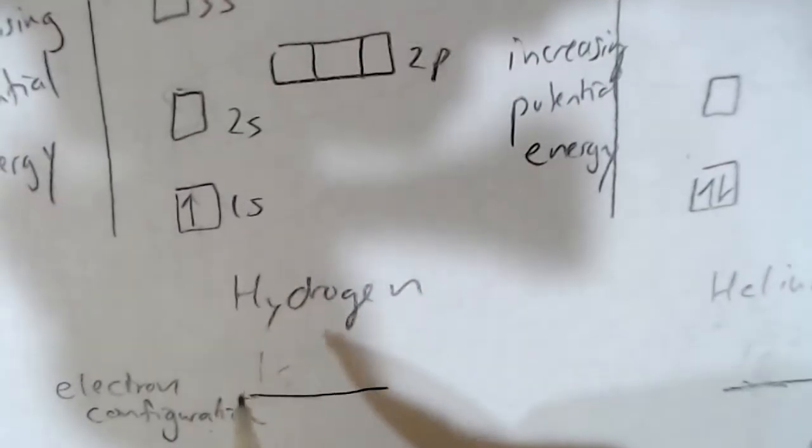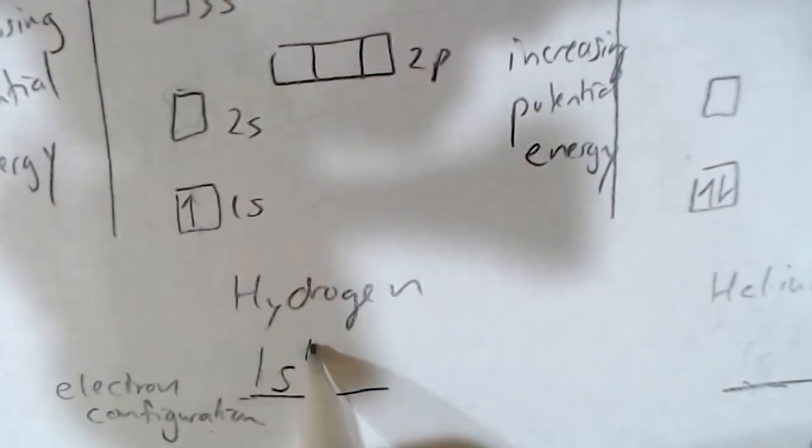If there were just one electron, because we had hydrogen, then it would be in the 1s subshell. And we could write its electron configuration, like its code to show where the electrons are, as 1s1. We're saying there's one electron in the 1s subshell.